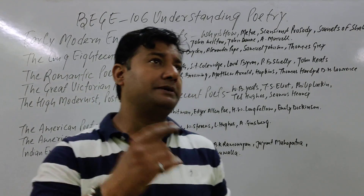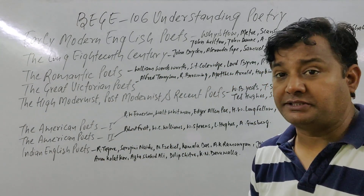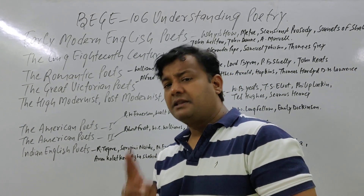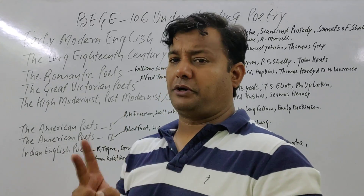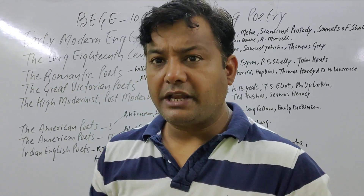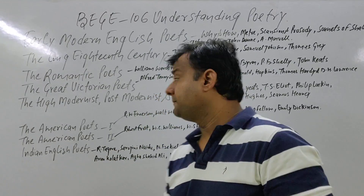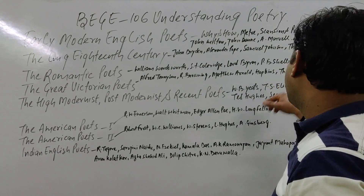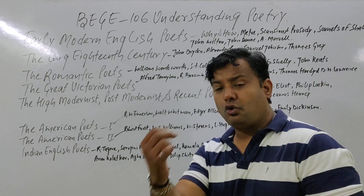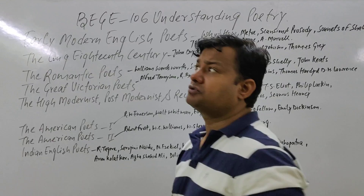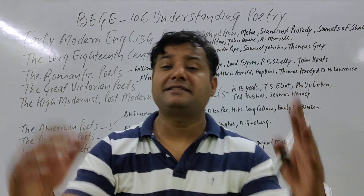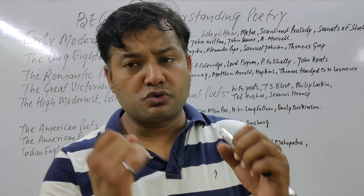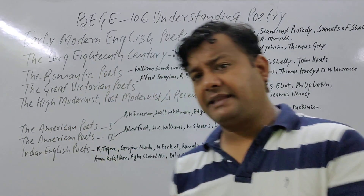Third section: we are having the Romantic Poets. When we talk about Romantic Poets, William Wordsworth and S.T. Coleridge are two dominant Romantic poets. Then we also have Lord Byron, P.B. Shelley, and John Keats. We need to understand the poetry of these Romantic poets, their themes, their characters, and the way they write.